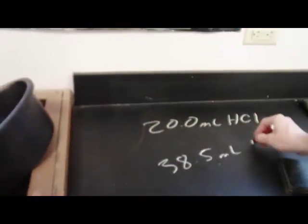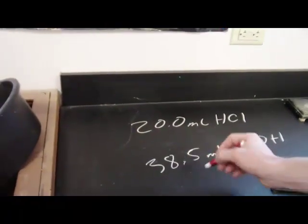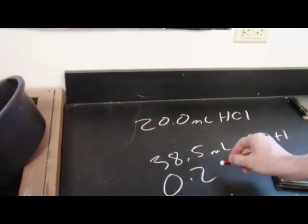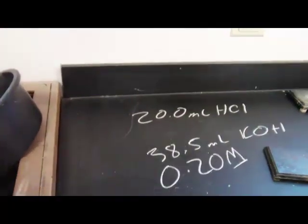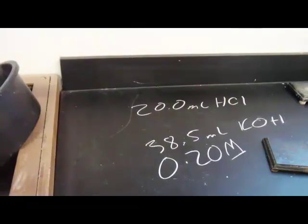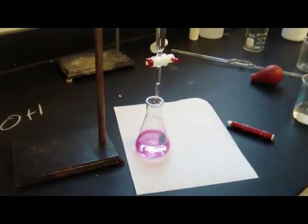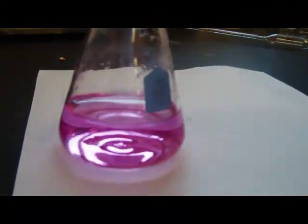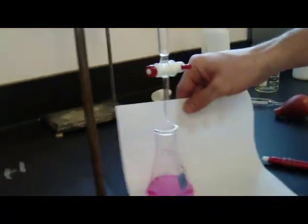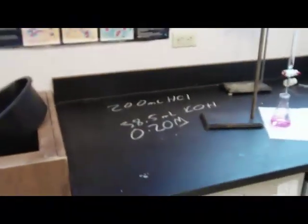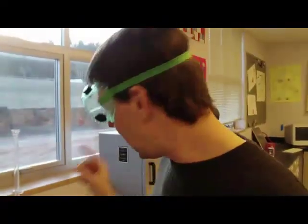38.5 milliliters of KOH. And my KOH is 0.20 molar. So, I know the concentration because it says so on the side of the container. Now, let me just overshoot this real quick. What you don't want is dark pink like that. If you get dark pink like that, you've added way too much. And you've overshot and you're going to have to start over. You want the faintest pink you could possibly get. So, what we're going to do is we're going to take these numbers now. We're going to do a little math. And we're going to calculate the concentration of the acid that we didn't know the concentration of.